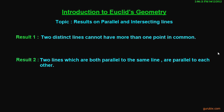Welcome friends. In this video we shall learn some results on parallel and intersecting lines. Here is the first result: two distinct lines cannot have more than one point in common. This is the first result.